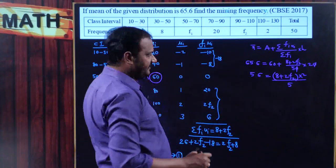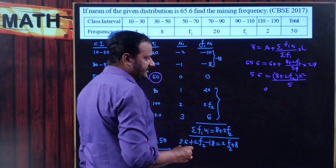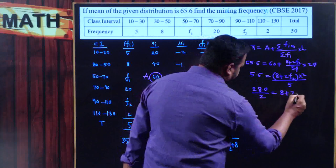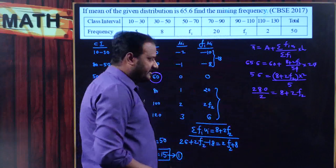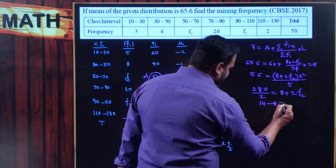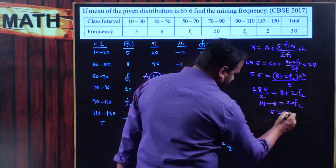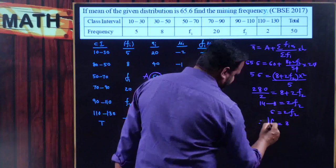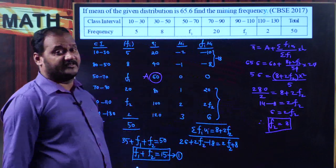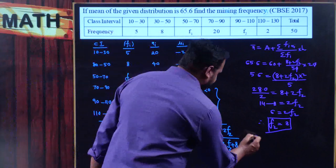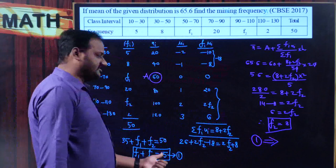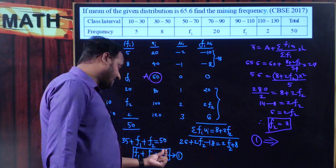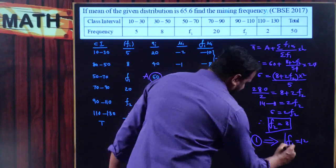Transposing 5 to the left: 5.6 × 5 = 28 = (8+2f2) × 2. Dividing by 2: 14 = 8+2f2. So 2f2 = 14−8 = 6, giving f2 = 3. Using f1+f2=15: f1+3=15, so f1 = 12. Therefore f1 = 12 and f2 = 3.